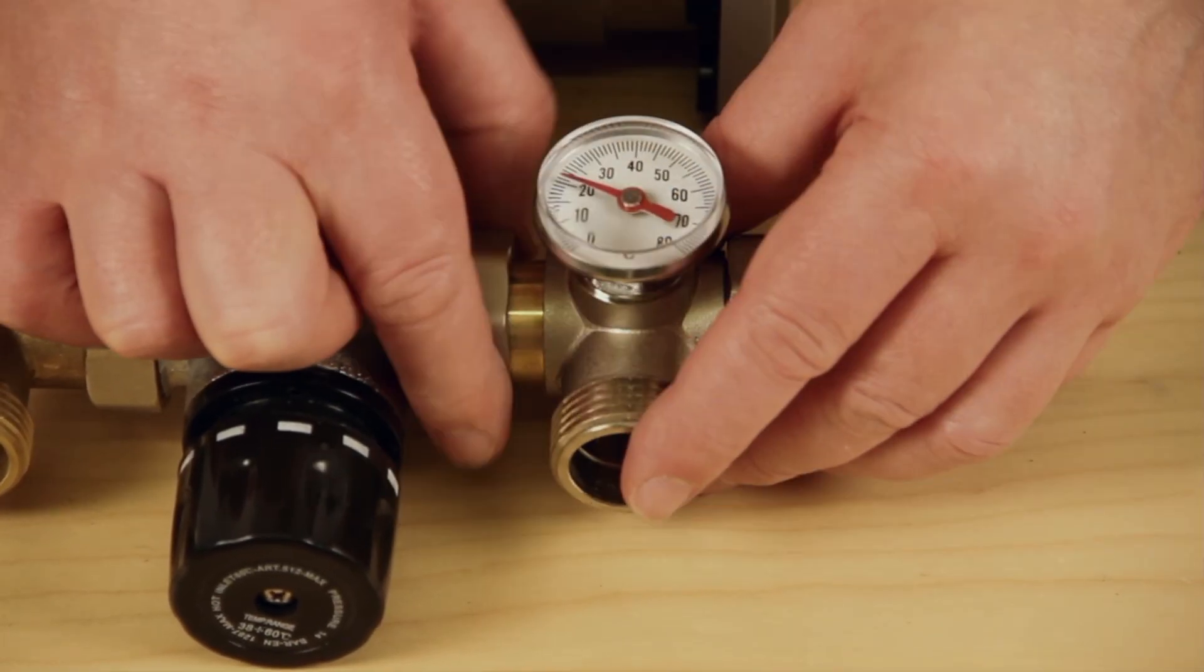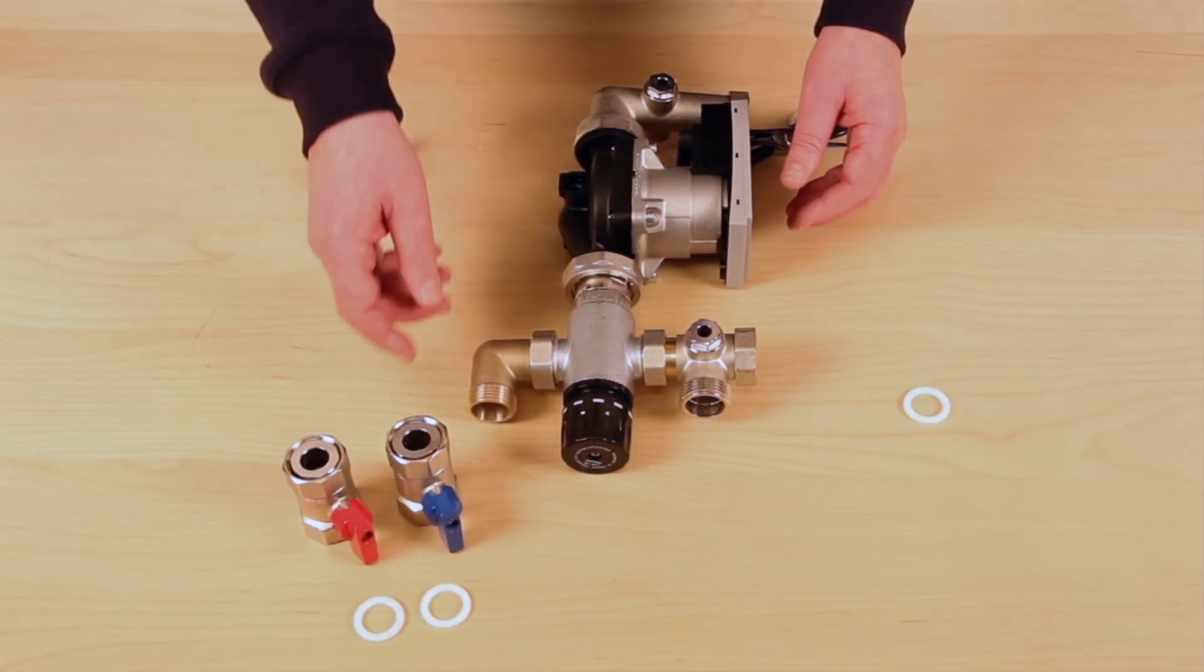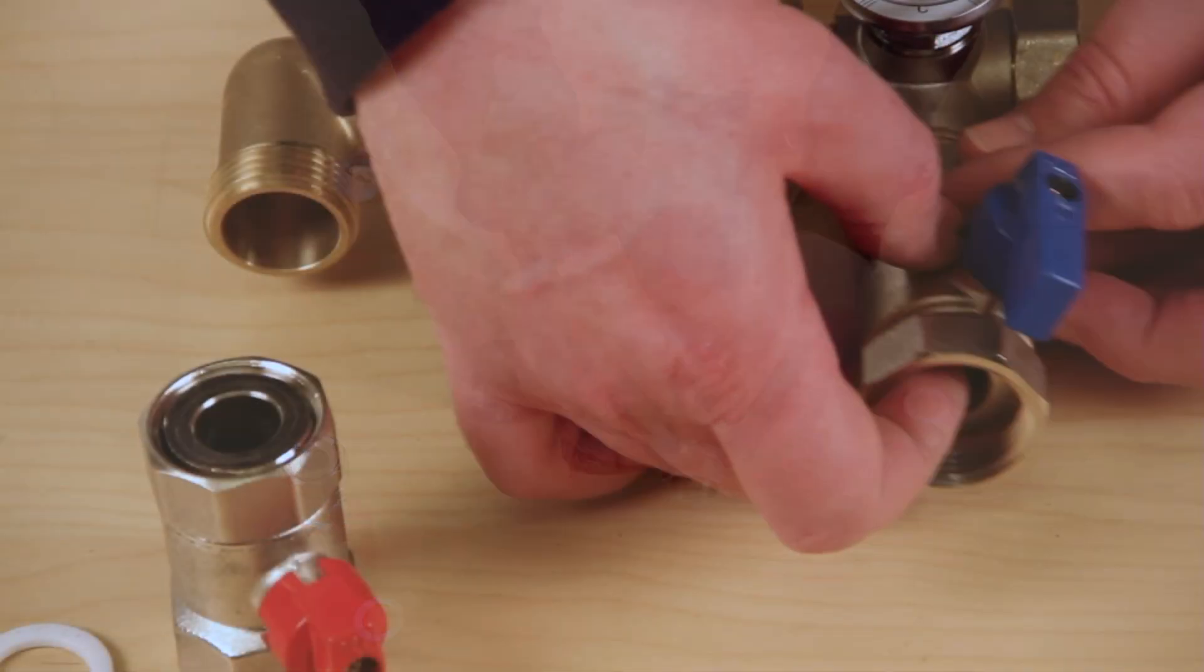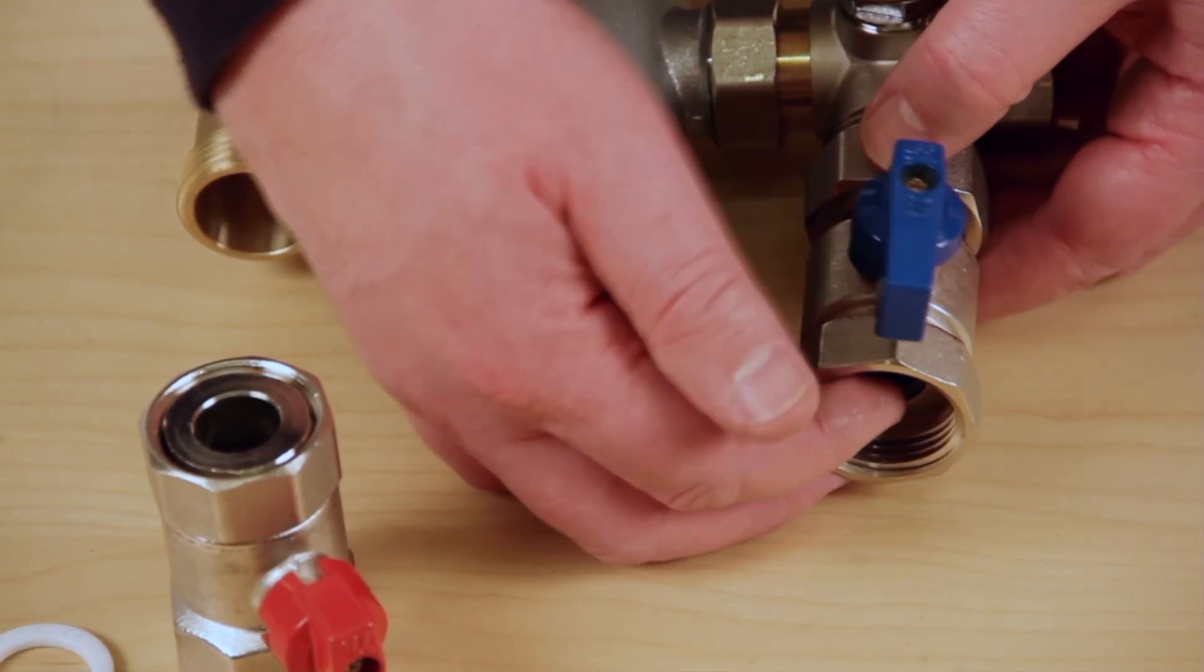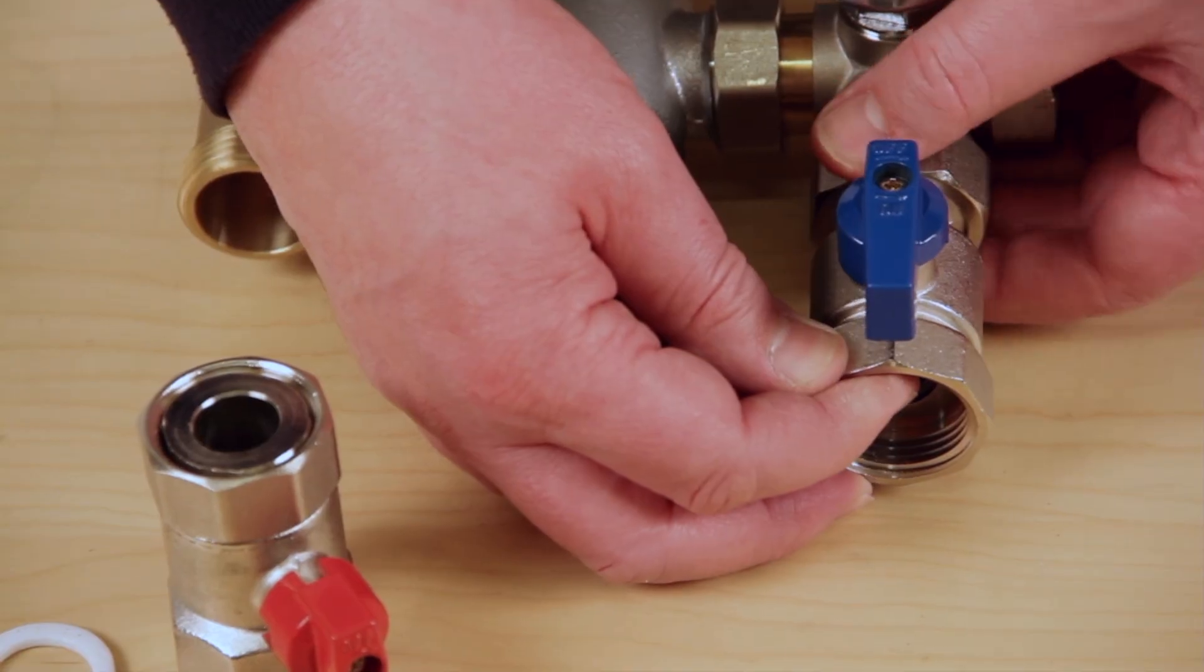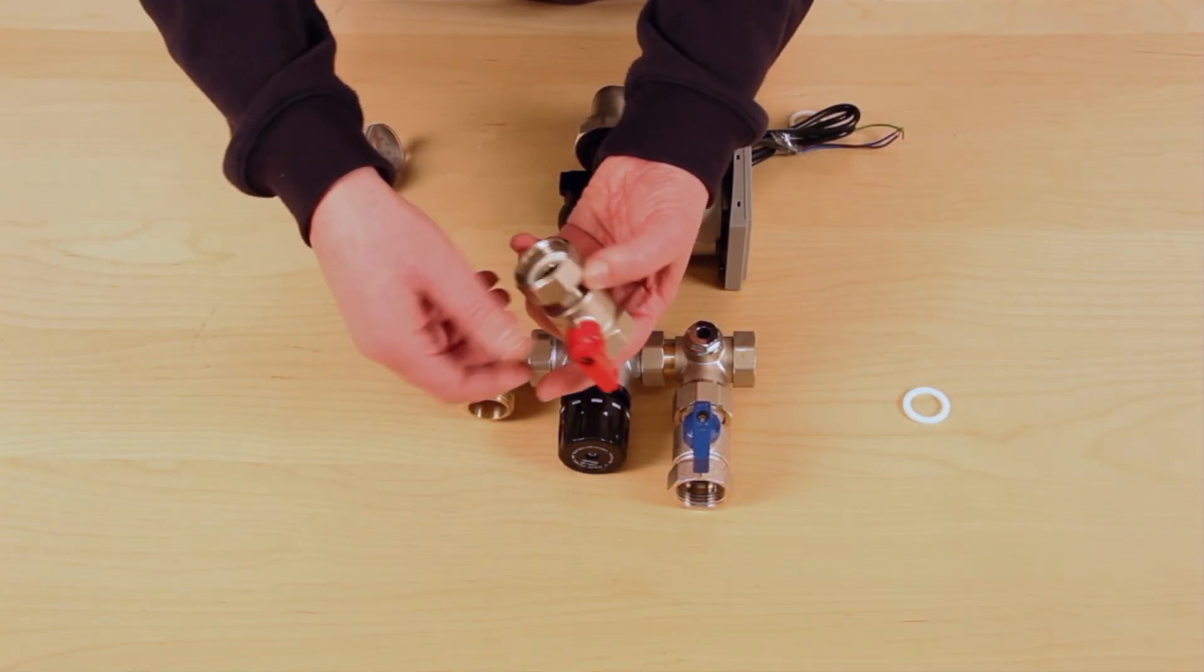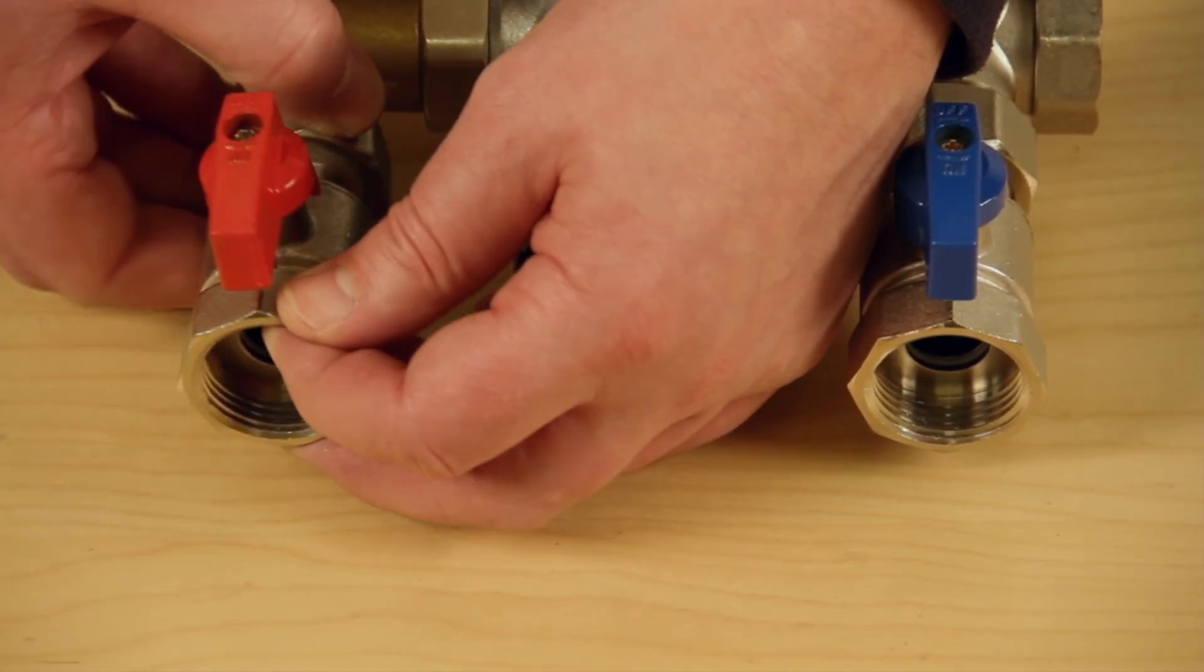Fit the return and flow isolation valves complete with washers, ensuring the blue is fitted to the return outlet and red to the flow inlet.